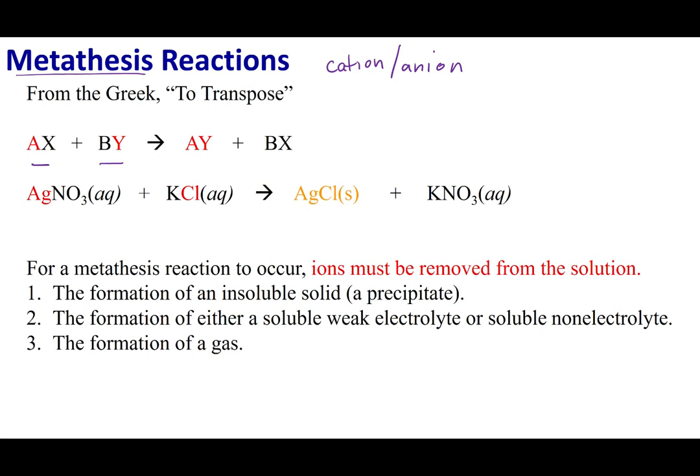In a metathesis reaction, I'm going to transpose my ions. The cation from my first compound is going to combine with the anion of my second compound. The anion from my first compound is going to combine with the cation of my second compound. In essence, I'm switching partners.